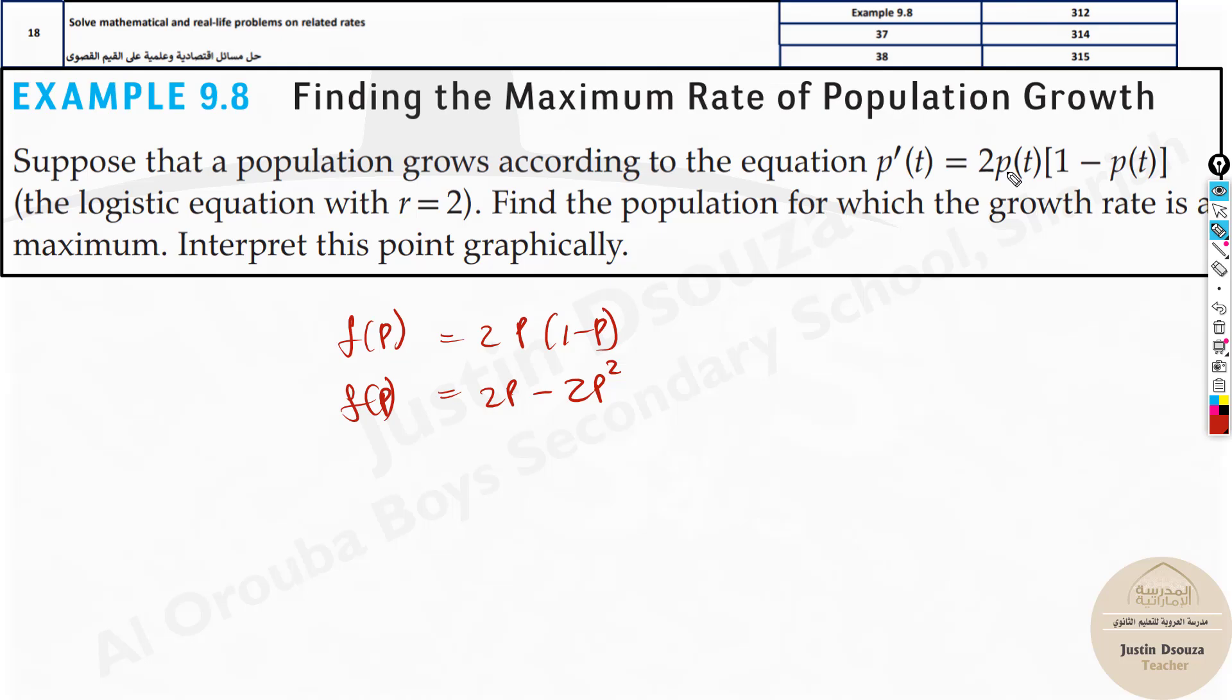How do we find any maximum or minimum points? It's by deriving this and making the derived part equal to 0. So let's derive this, f'(p) equals 2 minus 4p. Now make this equal to 0 and solve for p.